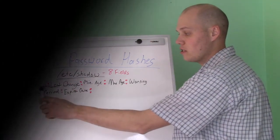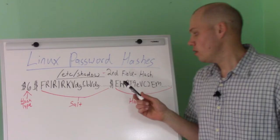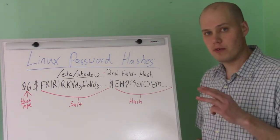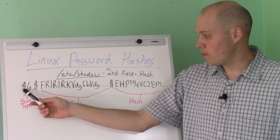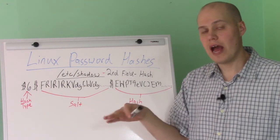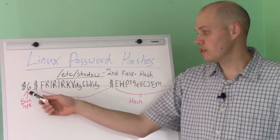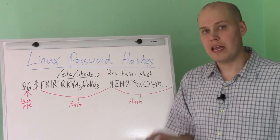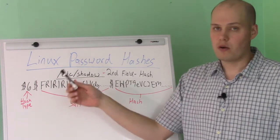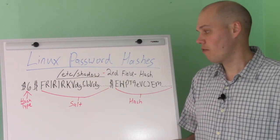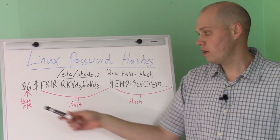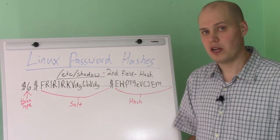Next, we'll talk about the hash field in a lot more detail. The second field is the hash, and it's composed of three different parts. The first part — the dollar sign and the number — specifies what type of hash it is. In this example it's a 6, which is SHA-512. You might also see a 1, which would be an MD5 hash, and there are several others. The default in Red Hat Enterprise Linux 7 is 6, which is SHA-512.